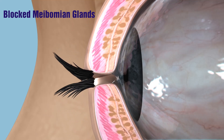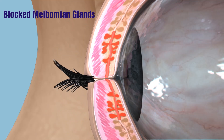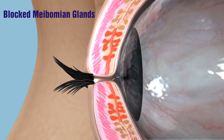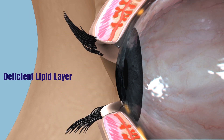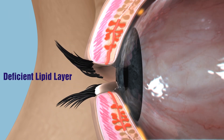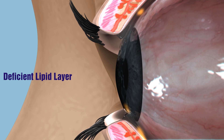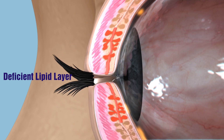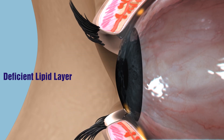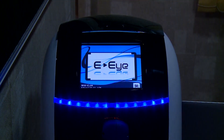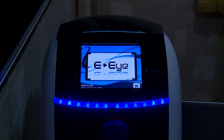Meibomian gland dysfunction leads to inadequate expression of meibum and consequently a deficient lipid layer with tear film instability and the onset of dry eye. How does the EI work?